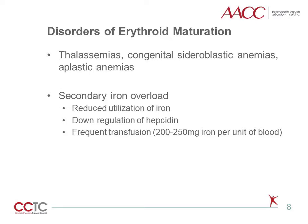It is estimated that transfused blood contains 200 to 250 mg of iron per unit. So for a patient receiving 2 to 4 units of blood per month, he or she will have an annual intake of 5 to 10 grams of iron. However, the body has no mechanism for excreting this excessive iron.